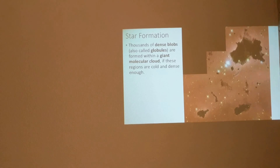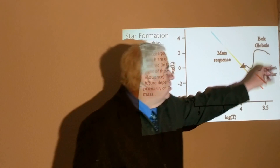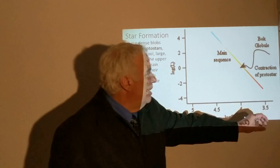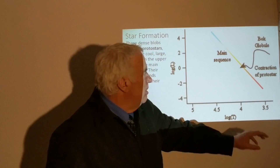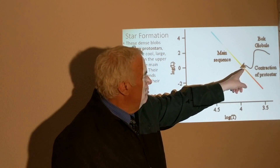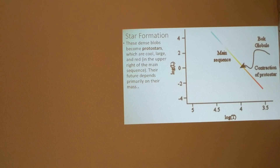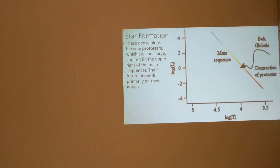Inside the giant molecular cloud, globules are forming and collapsing. On the HR diagram, these Bok globules start dark, then become red and large, and contract as they move toward the main sequence. Where they end up — their future — depends primarily on the mass of the object during the protostar stage.